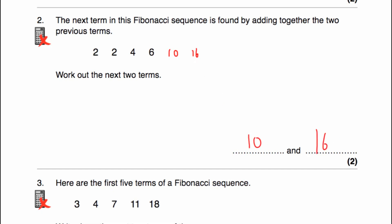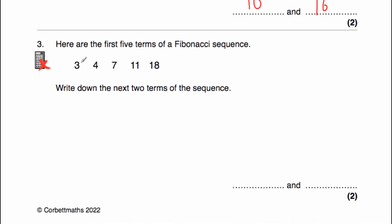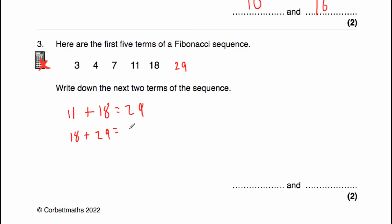Let's have a look at question number three. Question number three says here are the first five terms of a Fibonacci sequence, and we start off with three, four, seven, eleven, and eighteen. Let's just check it: three plus four is equal to seven, four plus seven is equal to eleven, seven plus eleven is equal to eighteen. Eleven plus eighteen is equal to twenty-nine. And to get the next term, we're going to do eighteen plus twenty-nine, which is equal to forty-seven. So our next two terms are twenty-nine and forty-seven.